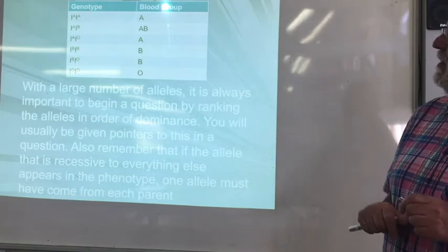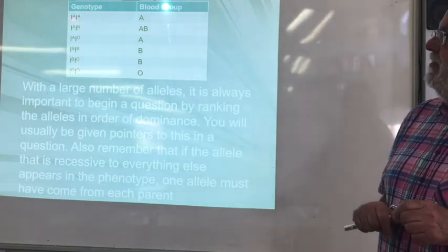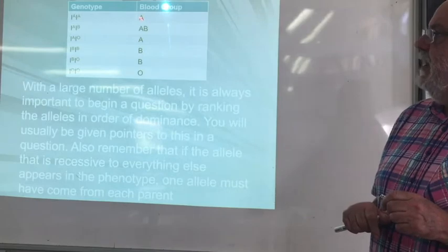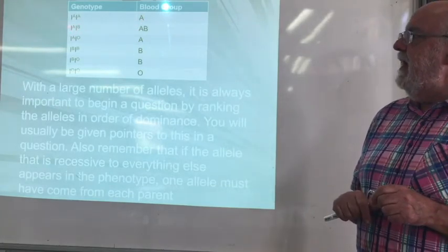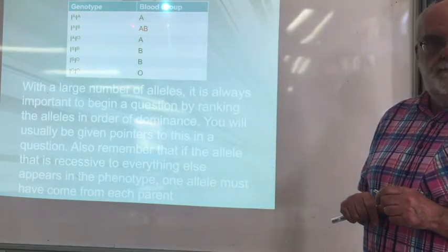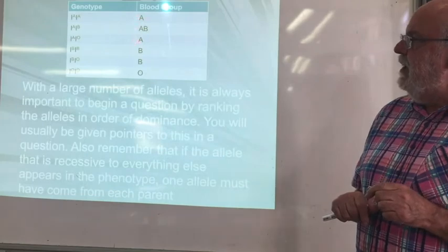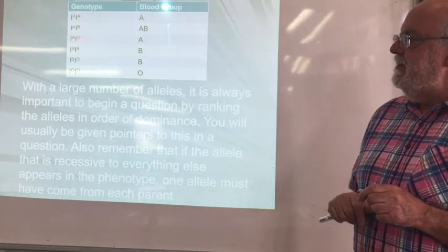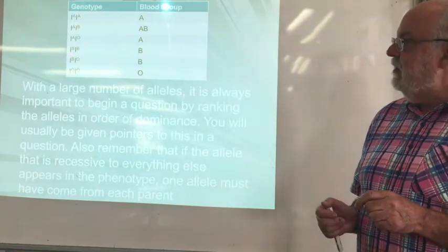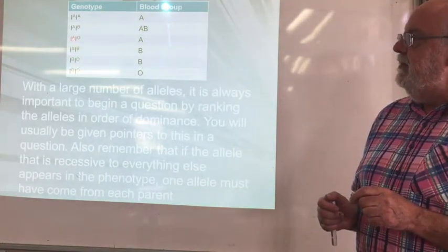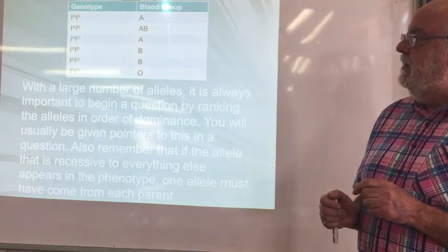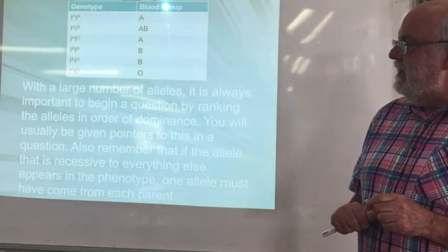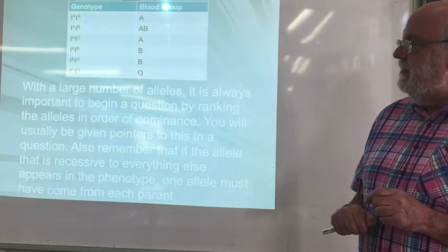These are all the various genotypes and blood groups that you can get. If you have inherited the I superscript A allele from your father and from your mother, you will be blood group A. If you have inherited A from your mother and B from your father, you'll be blood group AB and so on. There are a couple of different ways you can have blood group A. Remember that O is recessive to both A and B, so just like in any monohybrid cross, if you've inherited the dominant allele from one parent and the recessive from the other, you will show the dominant allele in your phenotype. The only way you can be blood group O is if you inherit the O allele from each of your two parents.